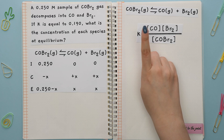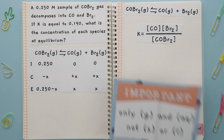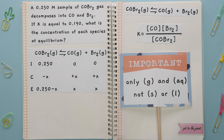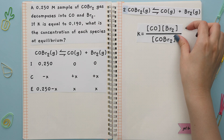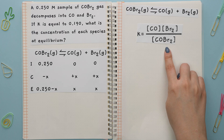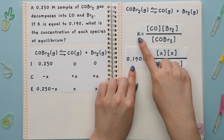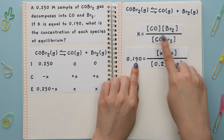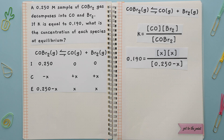To write an equilibrium constant expression, we use the balanced chemical equation and place the products on top and reactants on the bottom. We only include chemical species in their aqueous or gas state — we do not include solids or liquids. Any coefficients in front become the new exponents. We can then plug in the given value of K and plug in row E from the ICE table for each reactant and product. Multiplying the X's together gives us X squared.